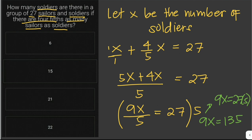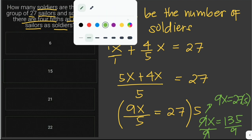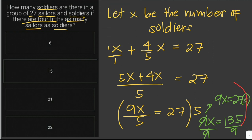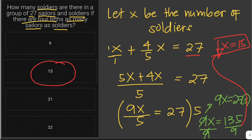We have 9x equals 135. Dividing both sides by 9, x equals 15. Therefore there are 15 soldiers. Since the total is 27, the number of sailors is 12. The answer is 15 soldiers.